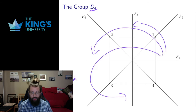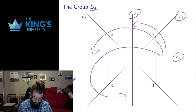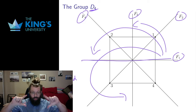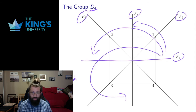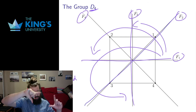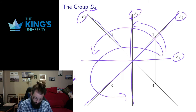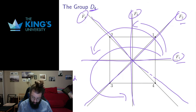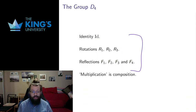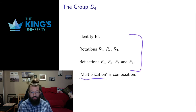I also have four lines of reflection, labeled F1, F2, F3, and F4. Reflecting over the x-axis flips the square vertically and preserves it. Reflecting over the y-axis does the same. Reflecting over each diagonal line also preserves it. I label these F1 through F4 going counterclockwise, like the rotations. So there are four lines of reflection, giving me the entire group of eight elements: the identity, three rotations, and four reflections. The multiplication in the group is the composition of those transformations.